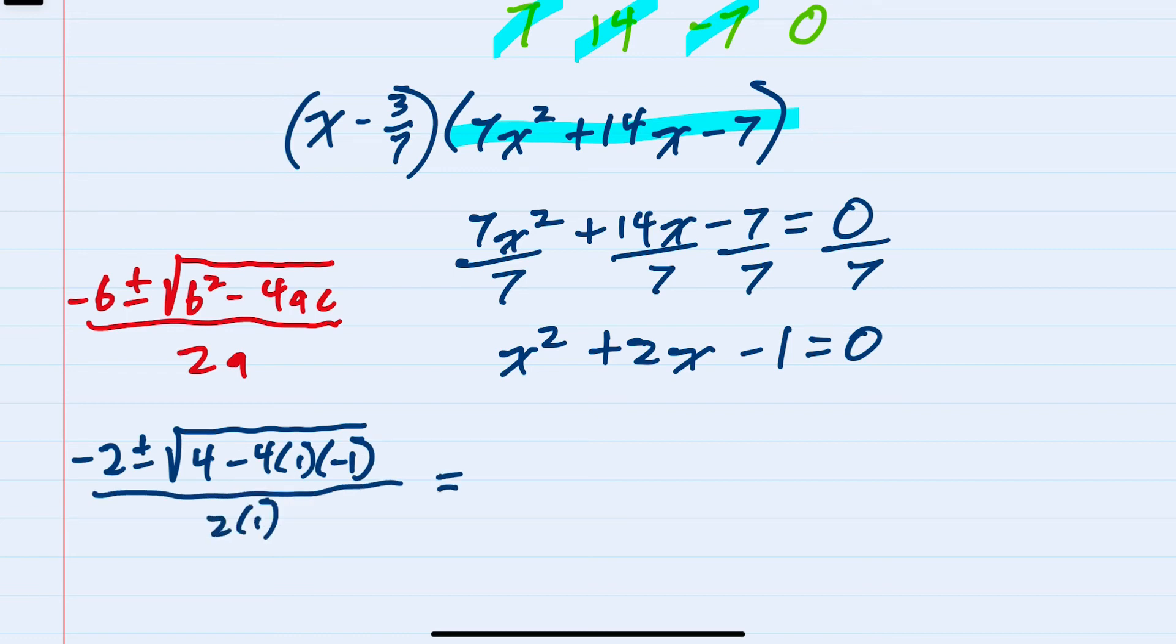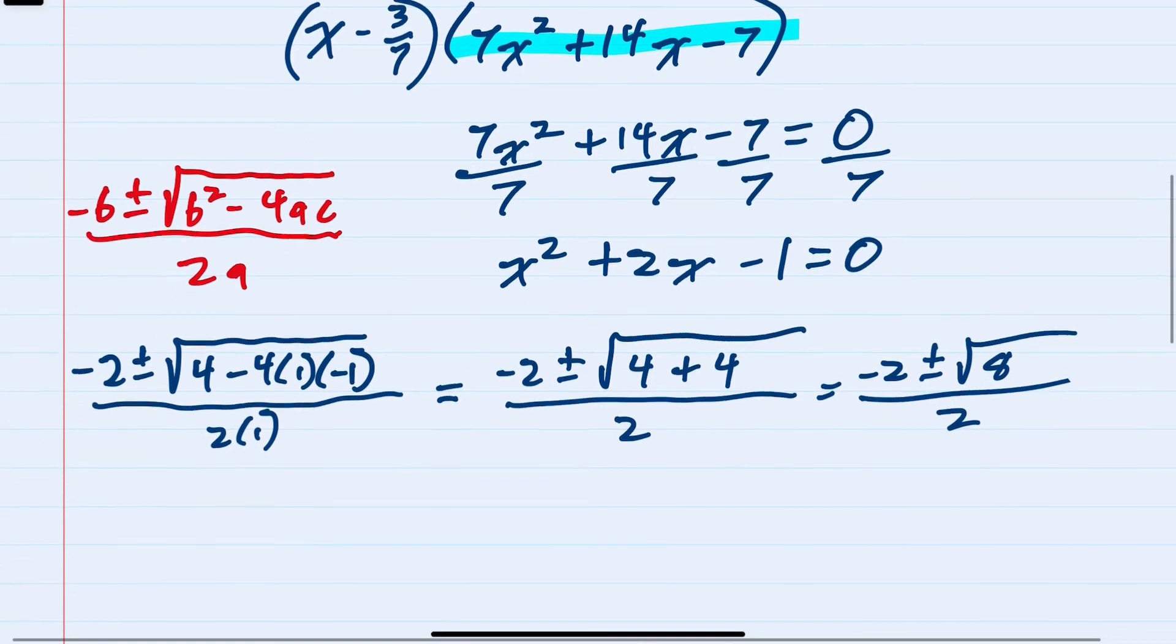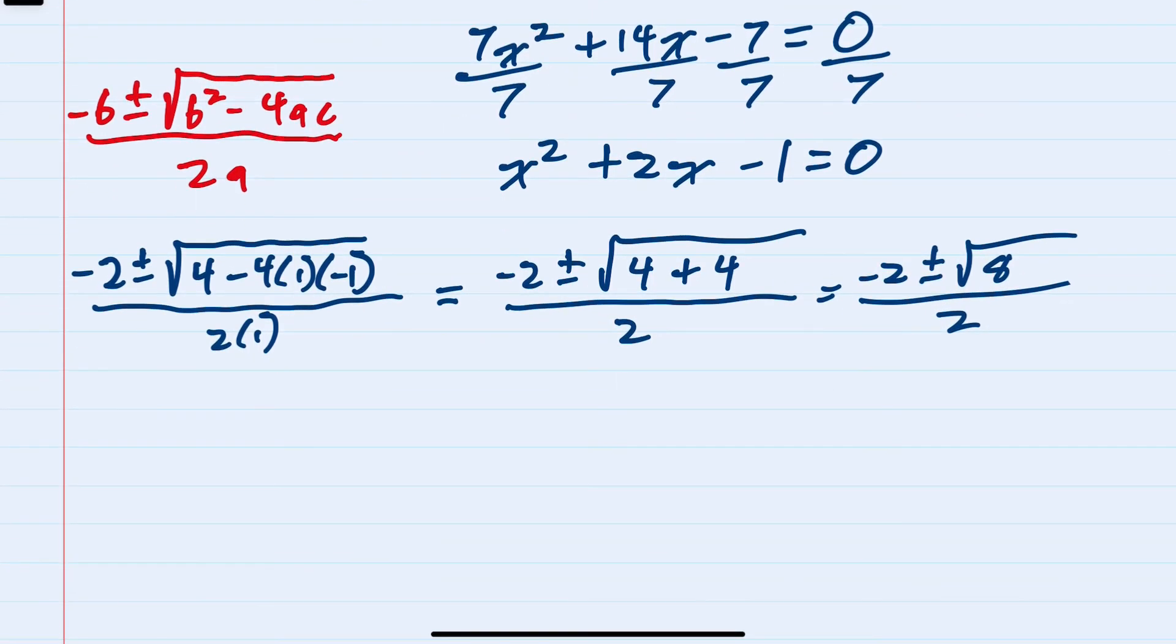Two times one. Simplifying under the radical here, we have four and then plus four, all over two times one which is just two.